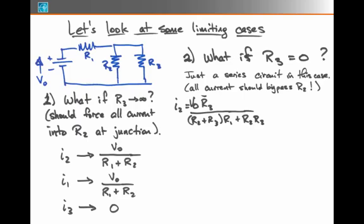If I look at my expression for I2, in the case where R3 is zero, well, what happens to I2? Well, the R3 in the numerator is going to go to zero, and that becomes zero.